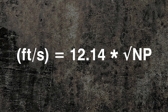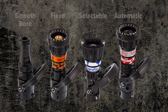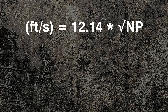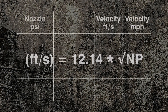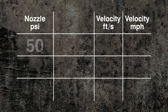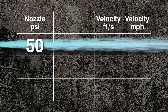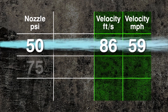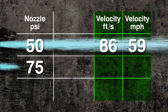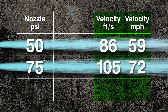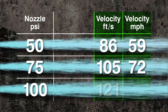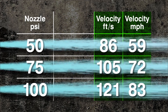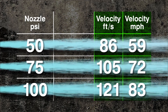This standard hydraulic formula for velocity flow applies to any smoothbore, fixed, selectable, or automatic nozzle. Using the hydraulic equation and solving for the velocity flow, when the nozzle's flow pressure changes, that stream travels faster or slower. Here is a summary of three common nozzle pressures and how fast each stream travels exiting a nozzle.